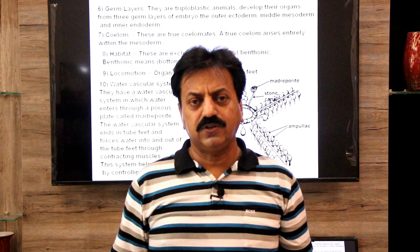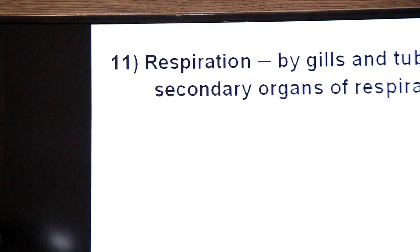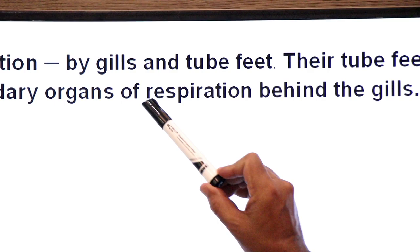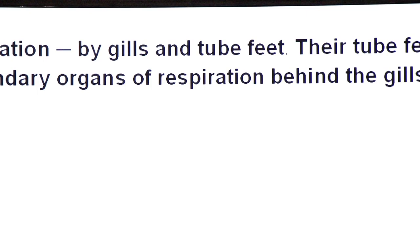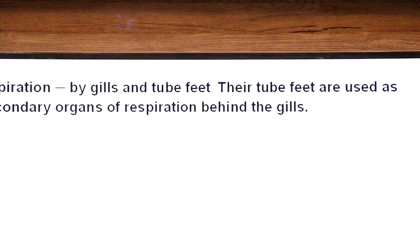And this helps in locomotion by controlling tube feet. This is a very important system. This helps in their locomotion by controlling the tube feet. Respiration by gills, because they are aquatic. Gills are primary respiratory organs, but they also use tube feet. Their tube feet are used as secondary organs of respiration behind the gills. So primary respiratory organs are gills and secondary respiratory organs are tube feet.